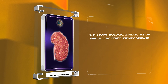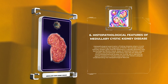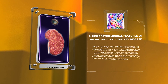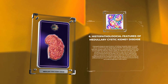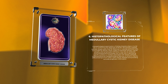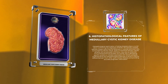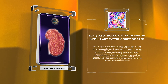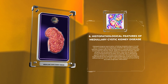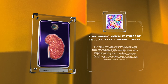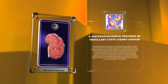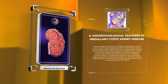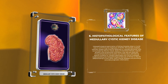Histopathological examination of kidney biopsies plays a crucial role in confirming the diagnosis of MCKD. Microscopic analysis typically reveals cysts lined by flattened or cuboidal epithelial cells, surrounded by fibrotic tissue. Areas of interstitial fibrosis, tubular atrophy, and lymphocyte infiltration may also be observed. Immunohistochemical studies can further aid in identifying specific proteins or markers associated with MCKD subtypes, helping differentiate it from other cystic kidney diseases and providing accurate prognostic information.